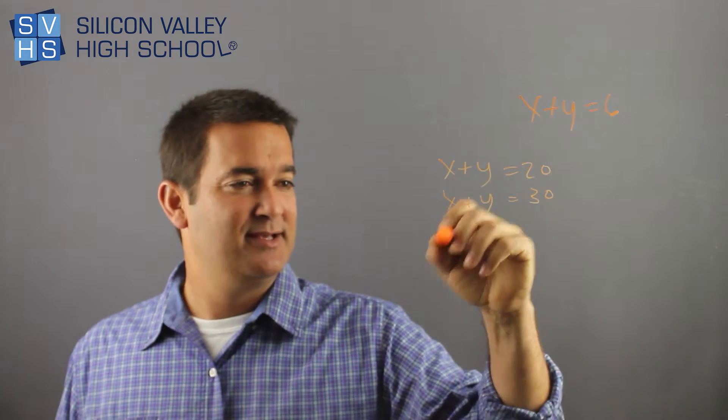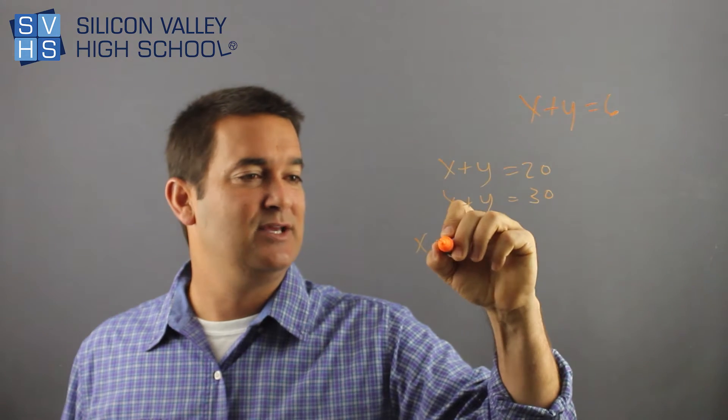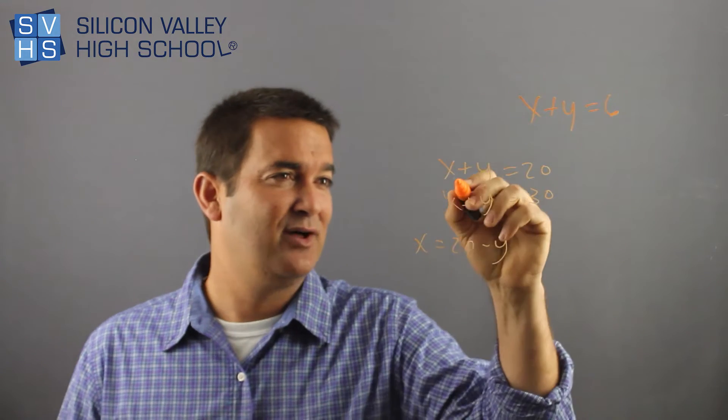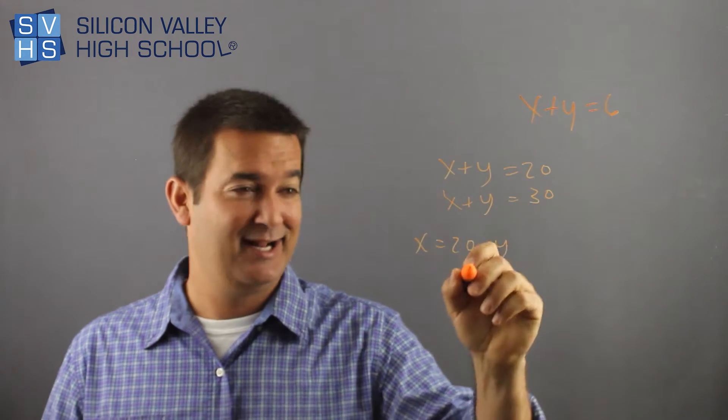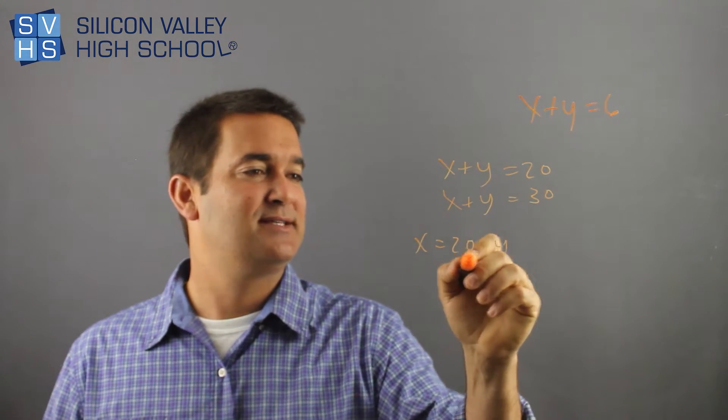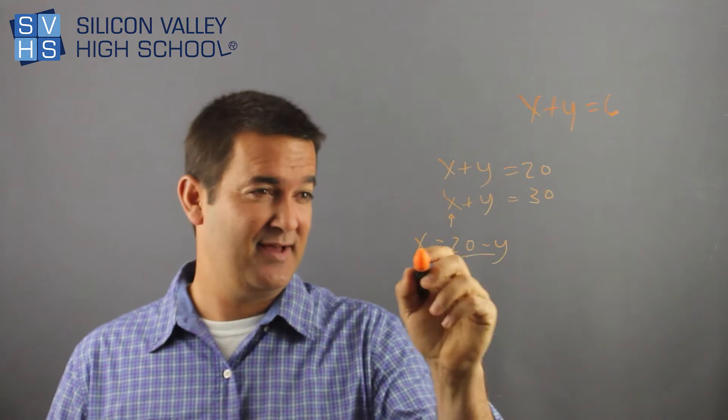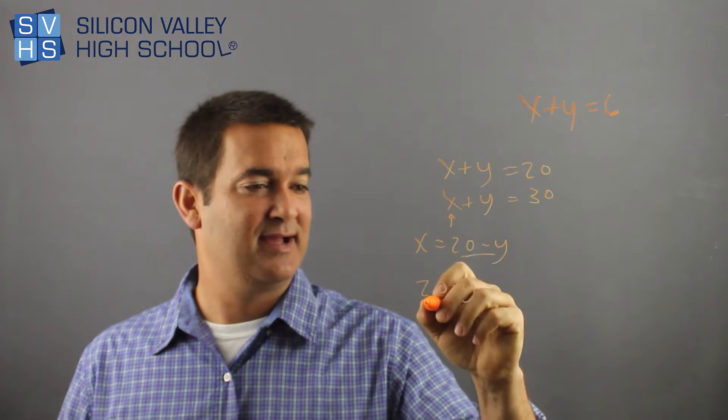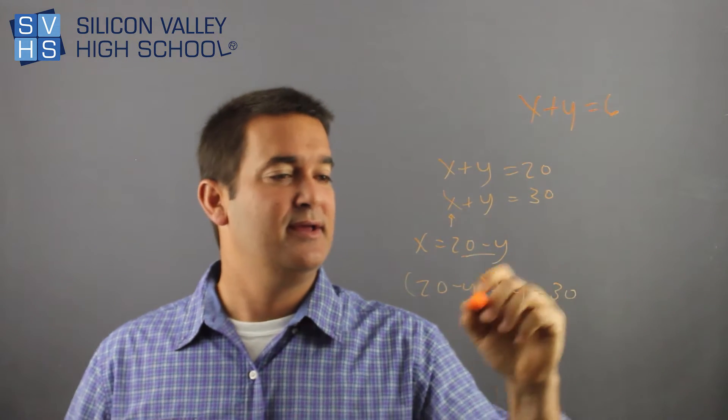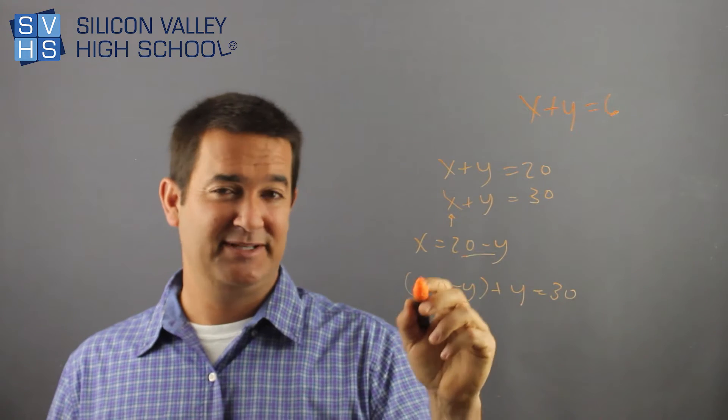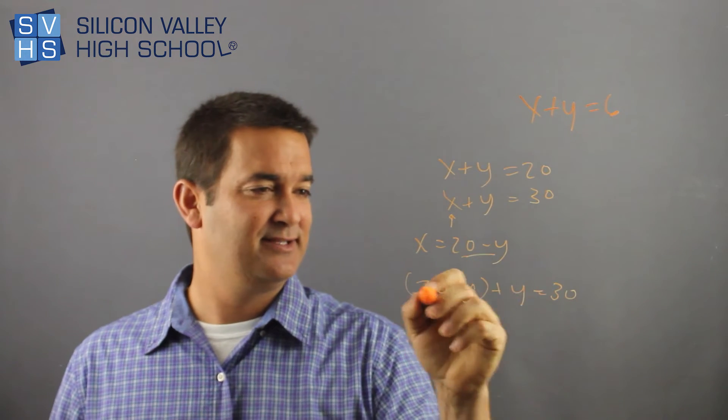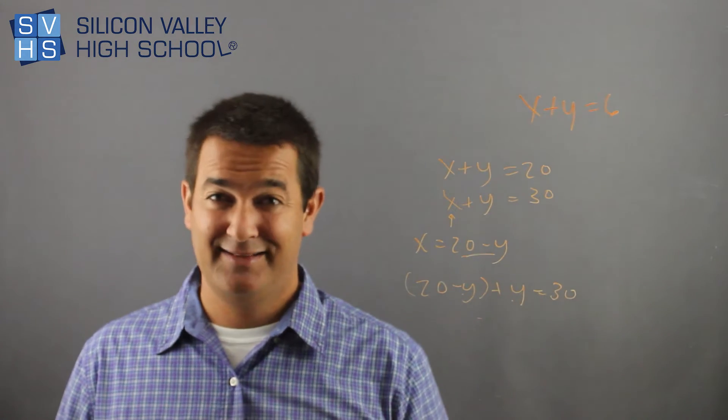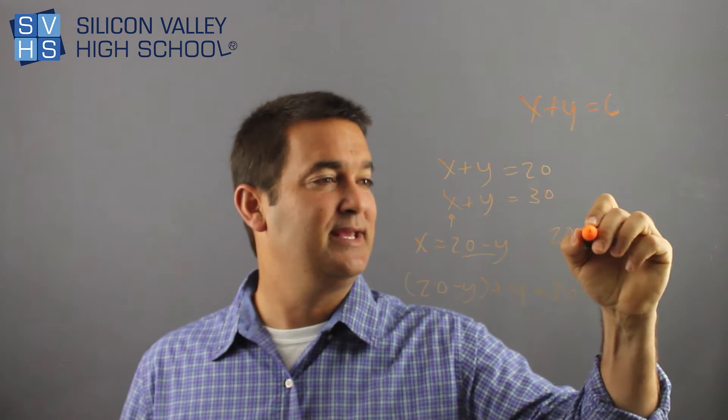Hopefully I didn't just blow your mind by doing that in my head. All I did was minus y to both sides, and I got that. So now this is going to go into this x, because if x equals that, I can plug it in. So now I have 20 minus y for that guy plus y equals 30. No distributing necessary. So the parentheses mean nothing. I can add like terms. So what's negative y plus y? They disappear, and I'm left with 20 equals 30.